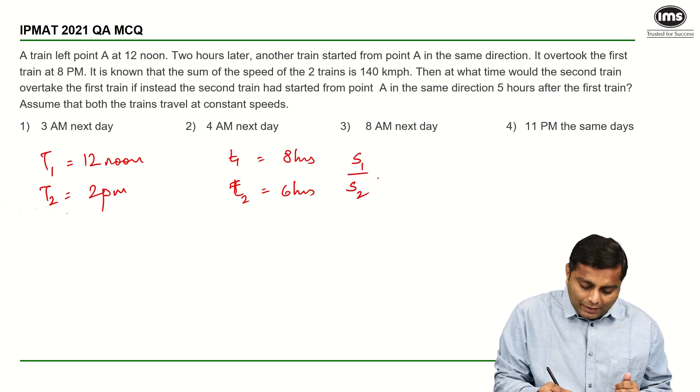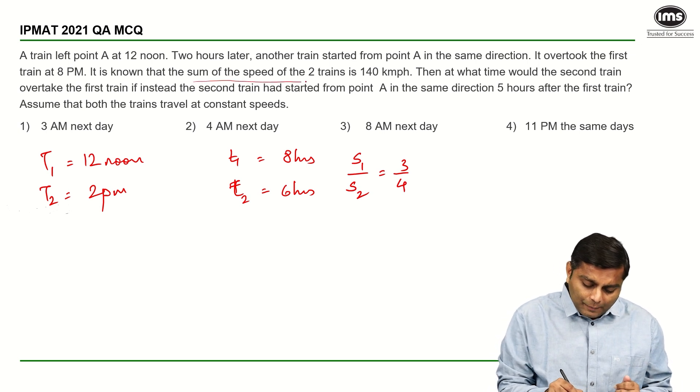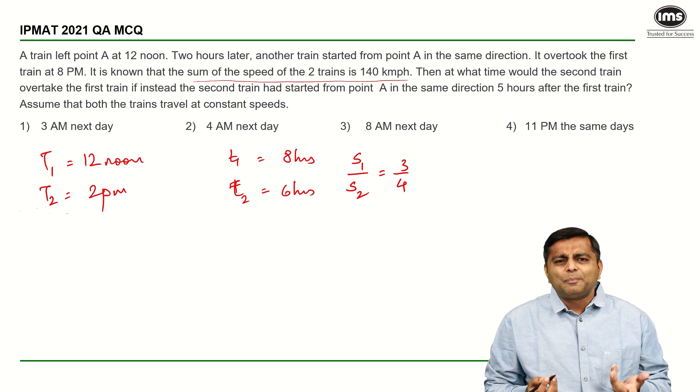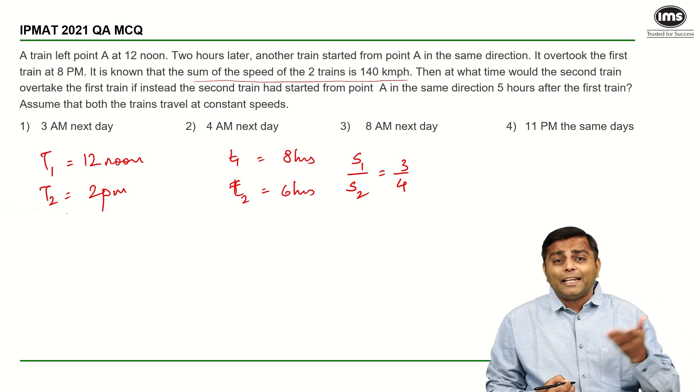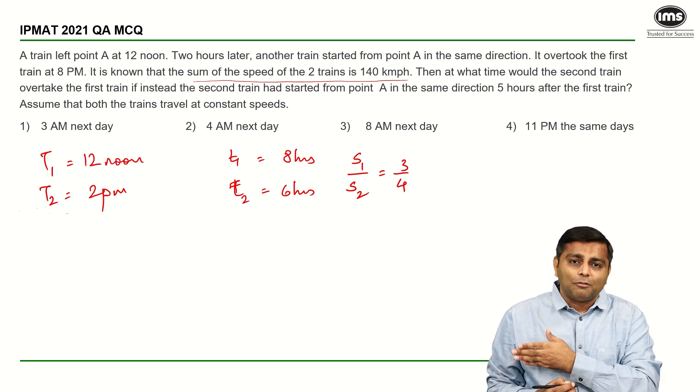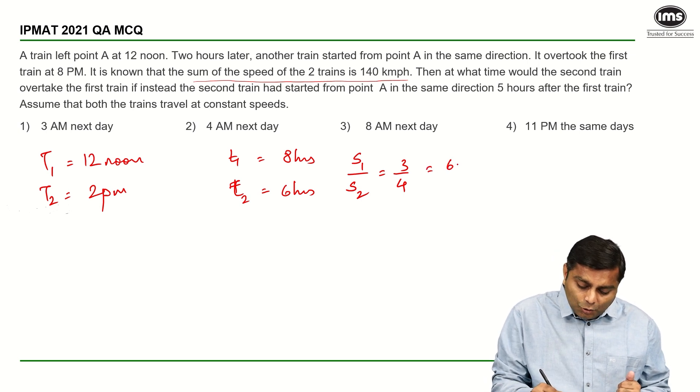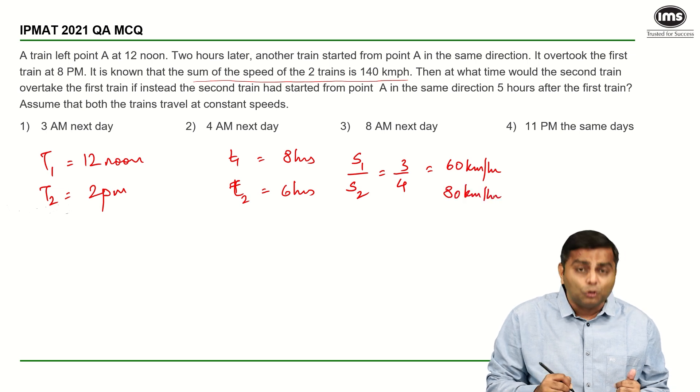I can say S1 upon S2 is equal to 3 upon 4. Now, moving ahead, we know that sum of the speed of the two trains is 140. This makes our life simple. We know S1 and S2 will add up to be 7x and that 7x is equal to 140. So, x has to be 20 and therefore, the actual speeds are going to be 60 kilometers per hour and 80 kilometers per hour.